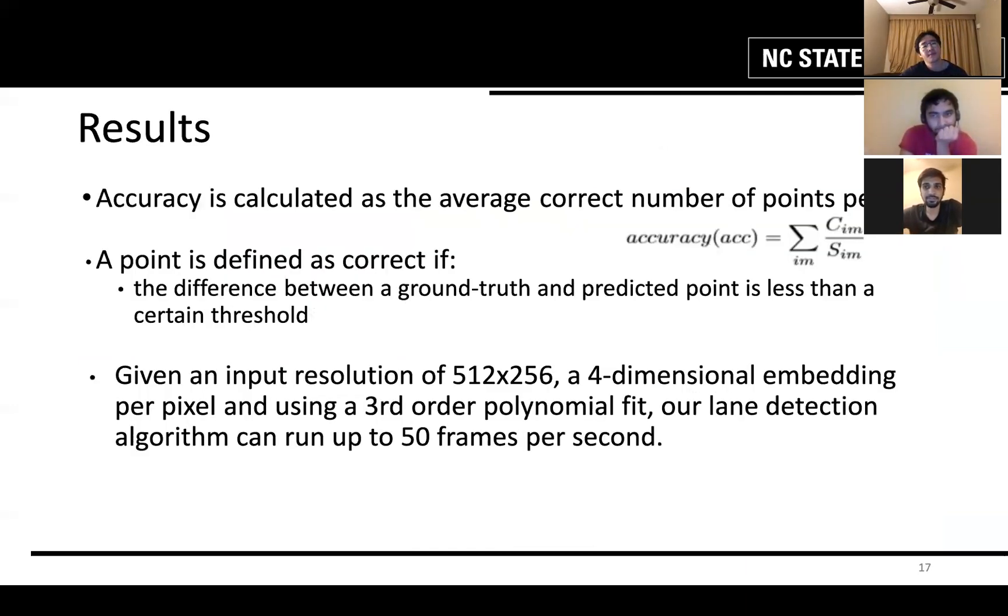Now for the accuracy, the given formula is the total number of correct points divided by the total number of lane points. The correct point here means that the distance between the ground truth point and the output point should be within a given threshold. The pixel points for each lane in the image are specified in the dataset and we have calculated the accuracy based on that.